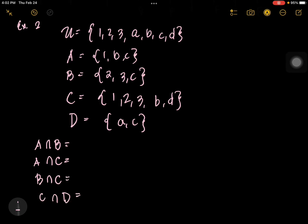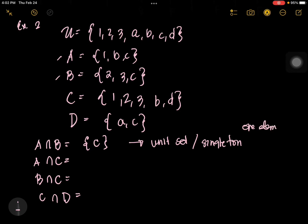Let's try to solve together. A intersection B: you have A and B — what is common? The common here is C. So we have {C} as the intersection of set A and set B. This is an example of a unit set, meaning it is a set with only one element. C is the element and it is only one, so it is called a unit set.